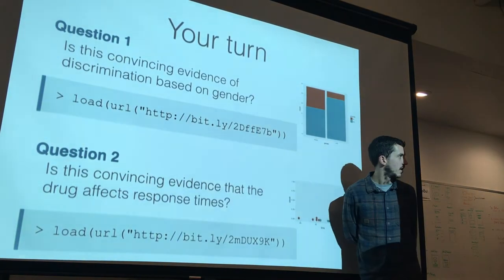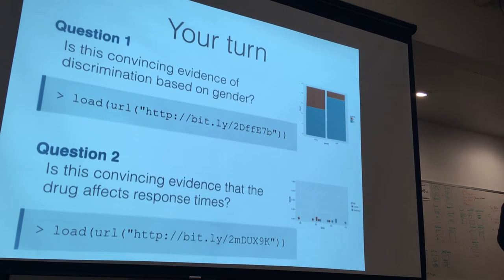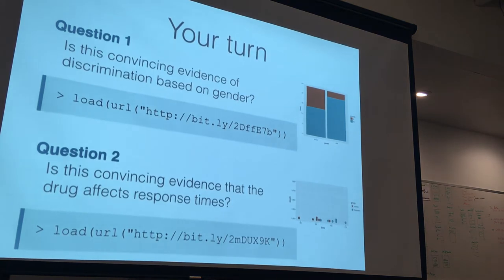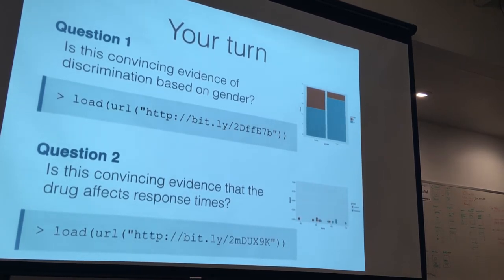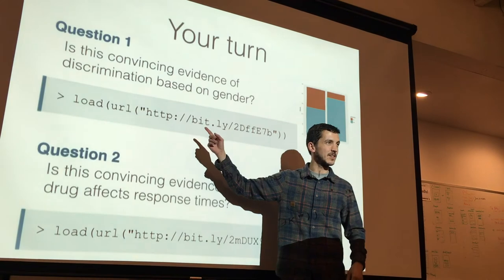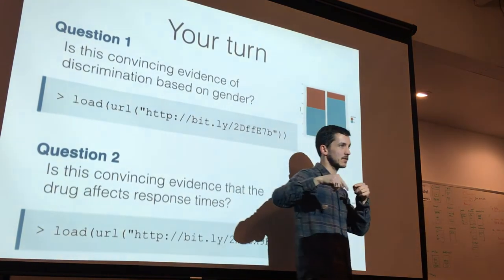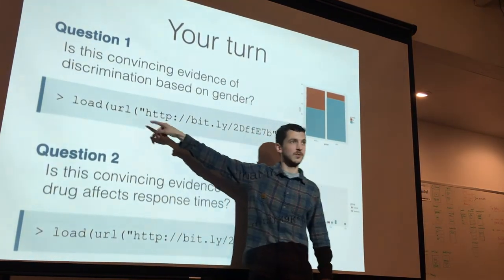You could do a t-test based on the mean proportion promoted — like 40% of females promoted and 83% of males — that would be a difference in proportions test, or a binomial test or z-test. One tip: if you're having trouble loading datasets, there's a package called curl; replace the url function with curl after loading the package, or just download the RData file directly from the browser.